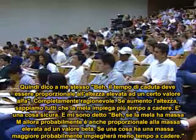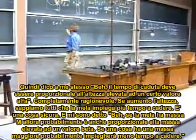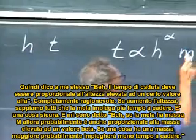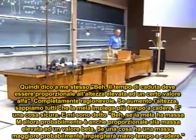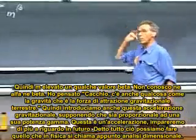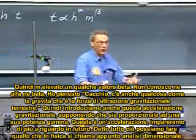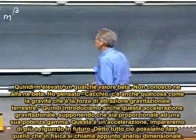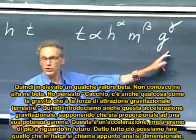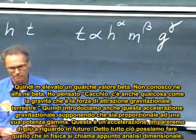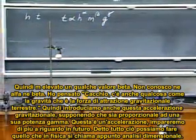Completely reasonable — if I make the height larger, we all know it takes longer for the apple to fall. And if the apple has a mass m, it probably is also proportional to the mass to the power beta. If something is more massive, it will probably take less time — so maybe m to some power beta. I don't know alpha; I don't know beta. And there is also something like gravity — the gravitational acceleration of the Earth. So let's assume that time is also proportional to the gravitational acceleration to the power gamma. Having said this, we can now do what's called in physics a dimensional analysis.